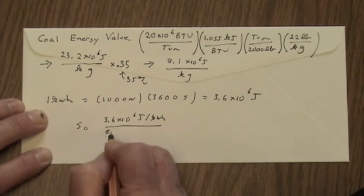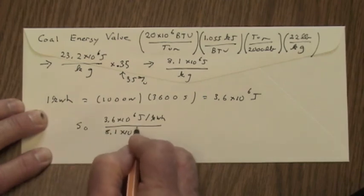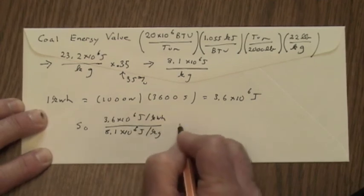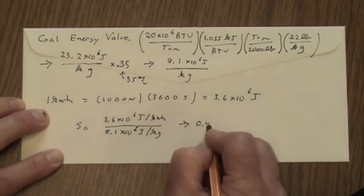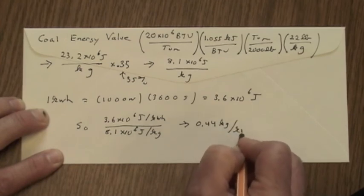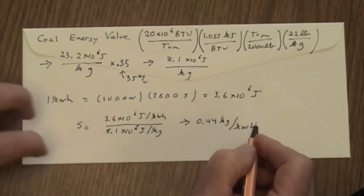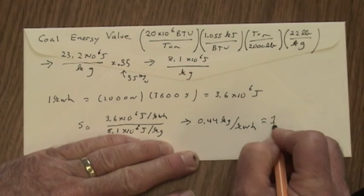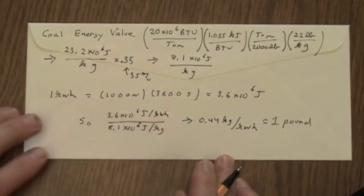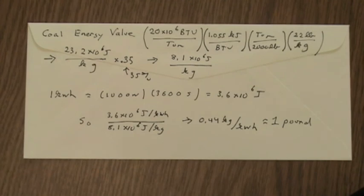And there are 8.1 times 10 to the sixth joules per kilogram of coal. This gives us 0.44 kilograms per kilowatt hour of energy or about 1 pound of coal per kilowatt hour, more or less depending on the efficiency of the power plant and the grade of the coal.